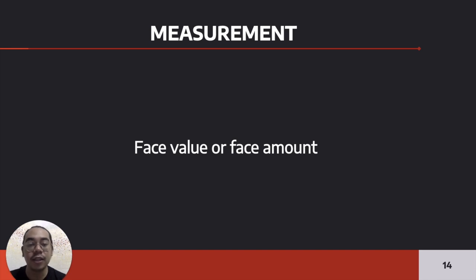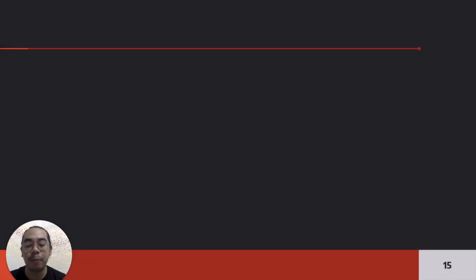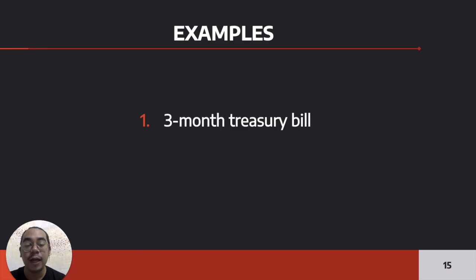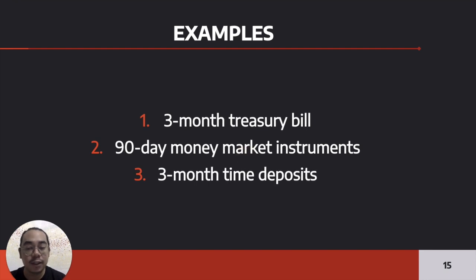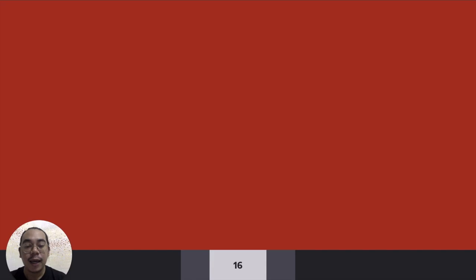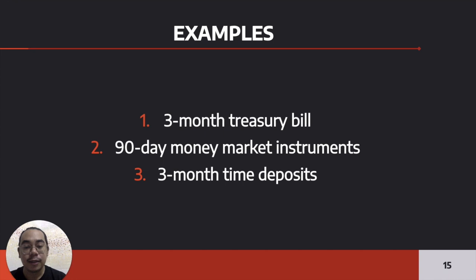Some examples that can qualify as cash equivalents: we have three-month treasury bills, 90-day money market instruments, and three-month time deposits. As you can notice, they are all three months. These are some examples of cash equivalents.